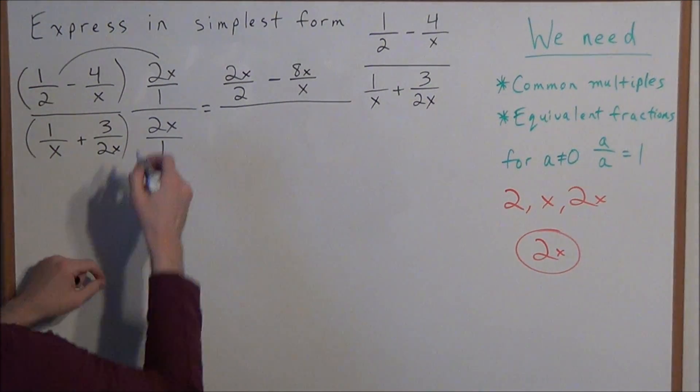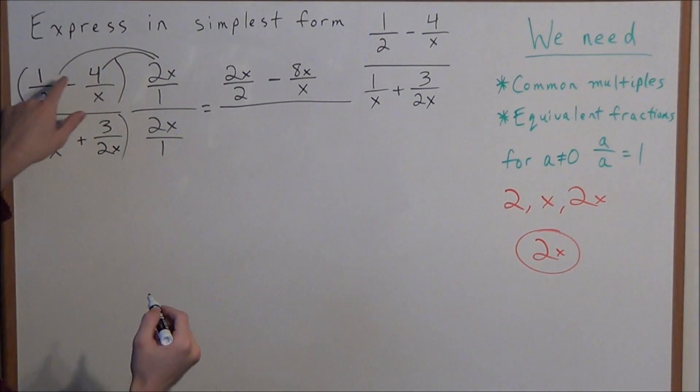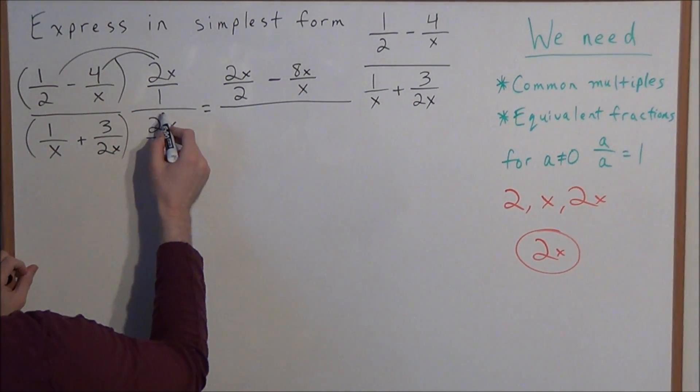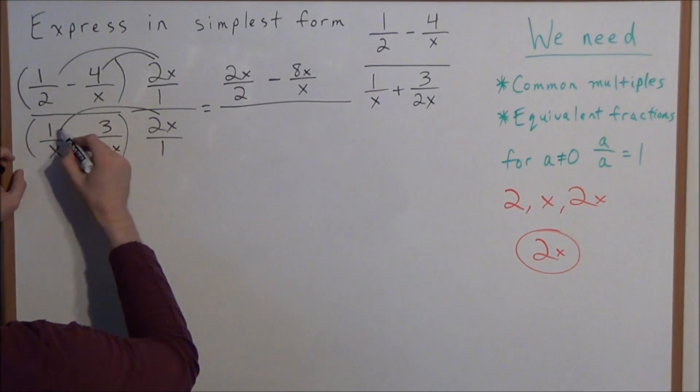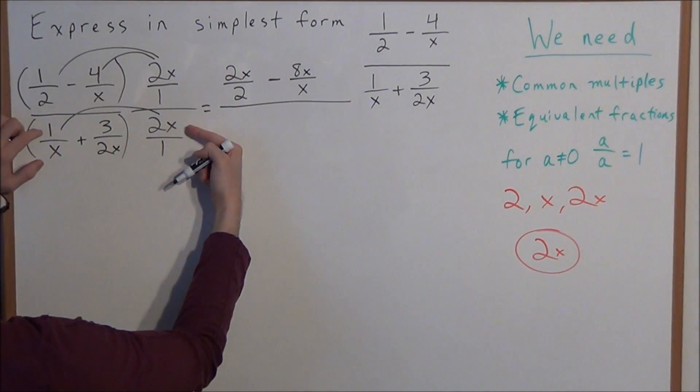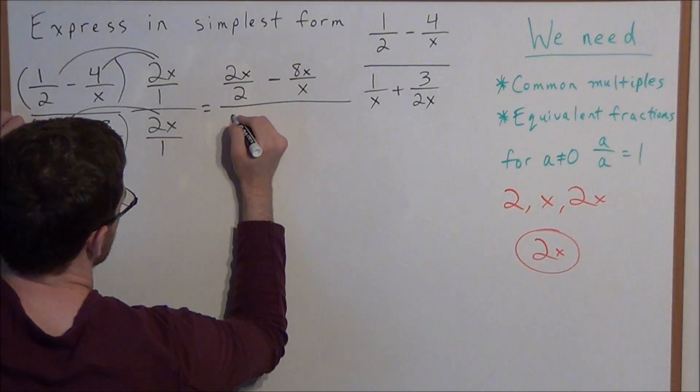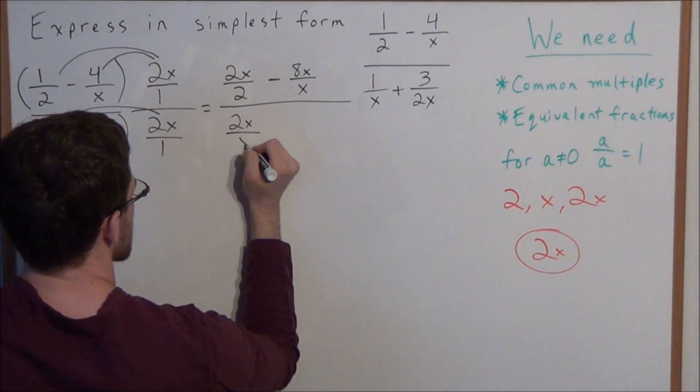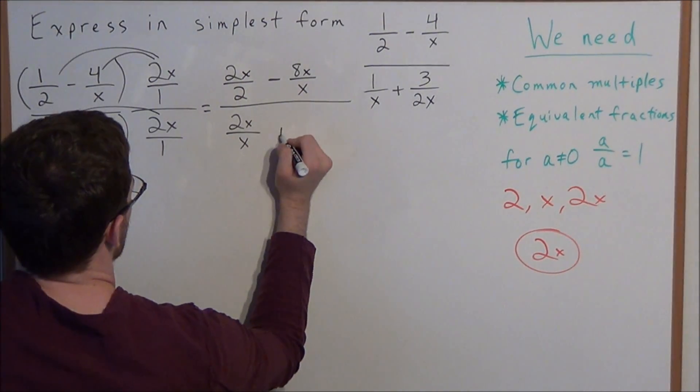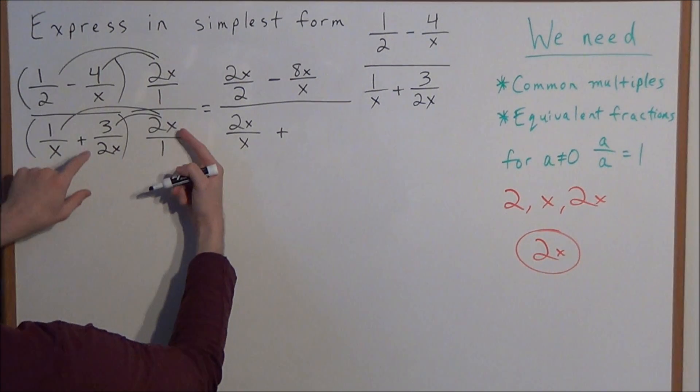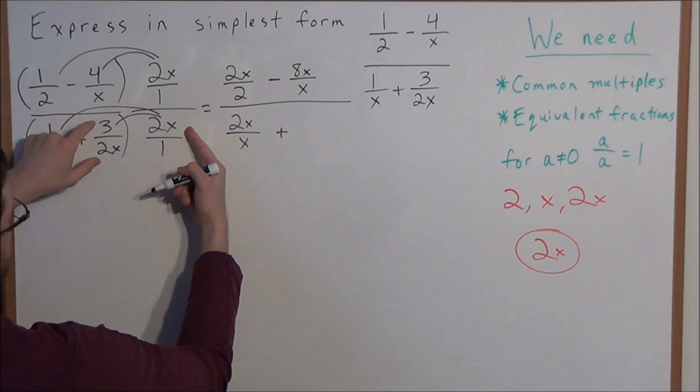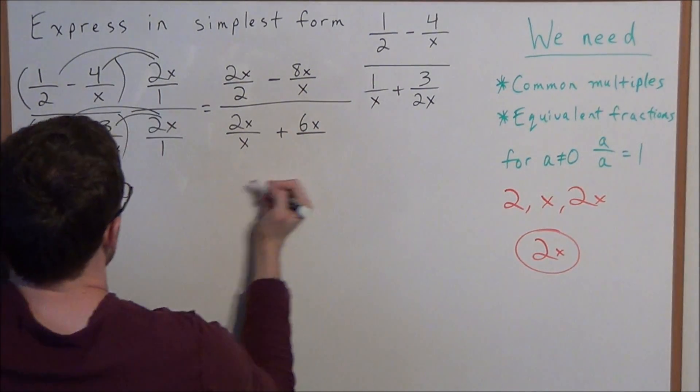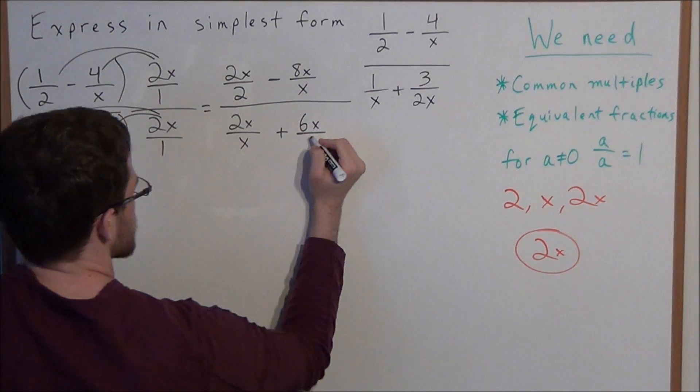So now let's go ahead and, let me just indicate that we multiply. Those two lines just mean that we distributed. So now we're looking at 2x over 1 times 1 over x. So we're going to multiply the numerators, 2x times 1 is 2x. And now we multiply the denominators, x times 1 is x. And now plus, we're going to multiply 2x over 1 times 3 over 2x. So we have 2x times 3 is 6x, and we have 2x times 1 is 2x.